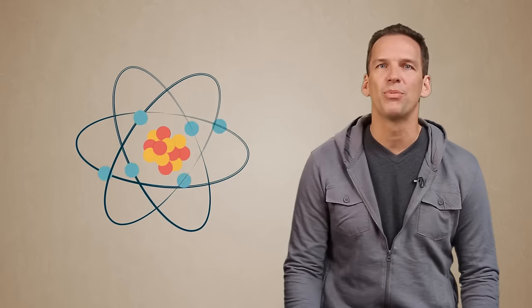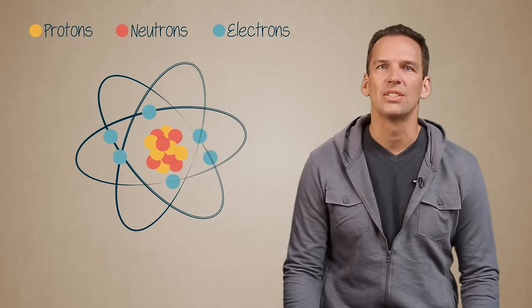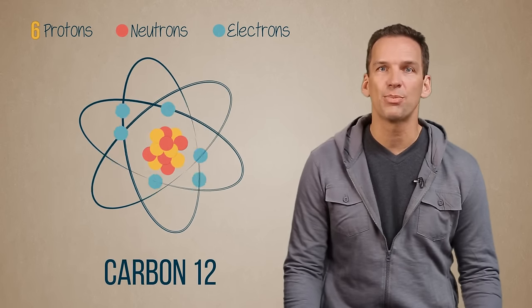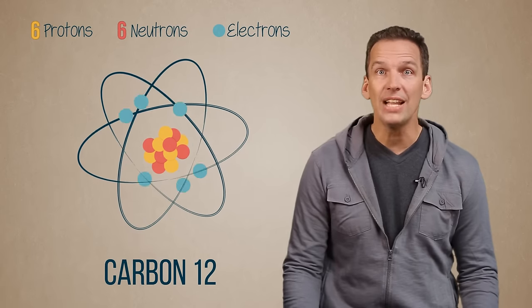All atoms are made from three things: protons, neutrons, and electrons. Carbon 12 has six protons and six neutrons. That's what makes it carbon 12.